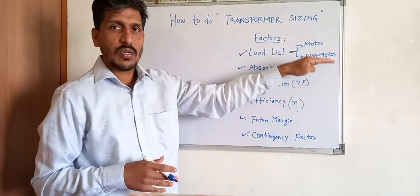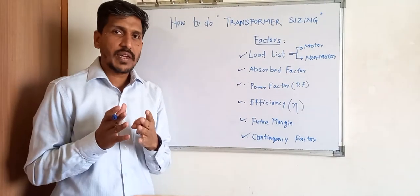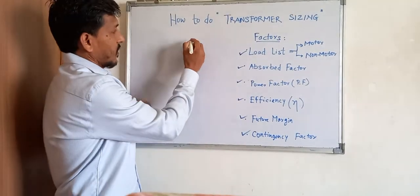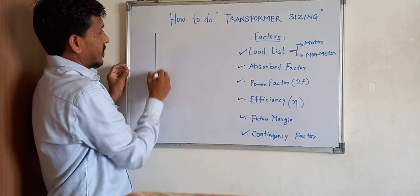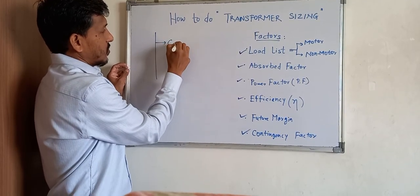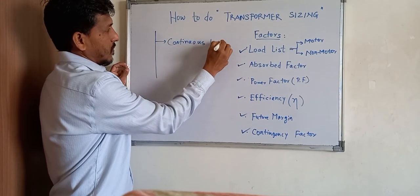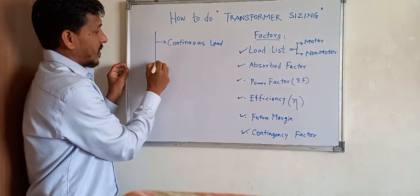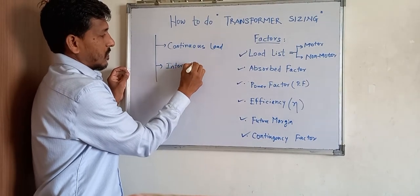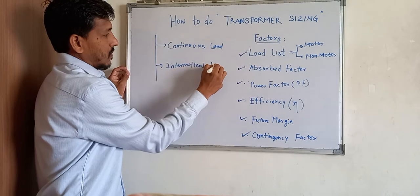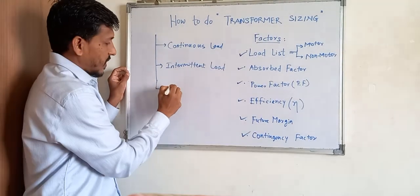The load list consists of motor loads and non-motor loads. It is segregated into three parts: continuous loads, intermittent loads, and standby loads.